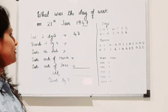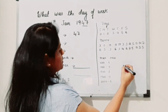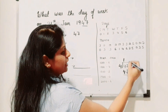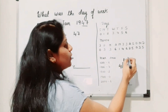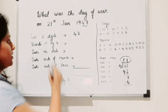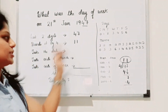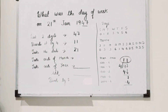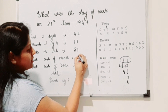After writing the last two digits (47), divide by 4. We don't care about the remainder — only the quotient. 47 divided by 4 gives a quotient of 11, so write 11. Next, write the date, which is 21. Then take the code of the month: January's code is 0, so write 0.